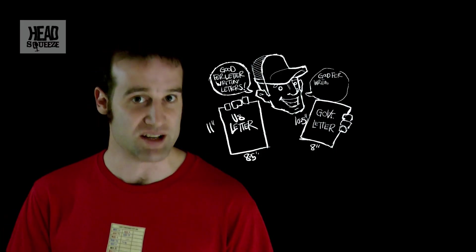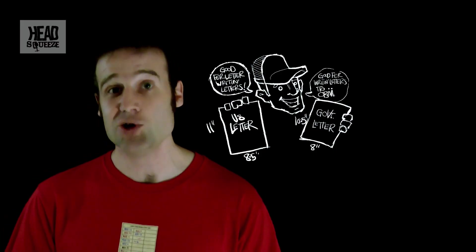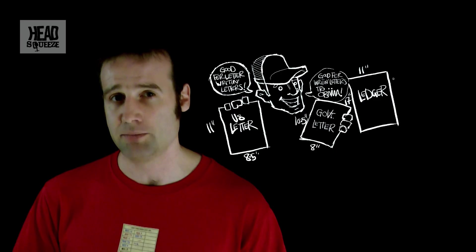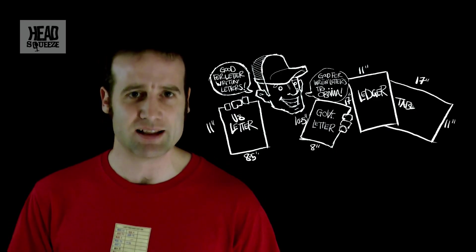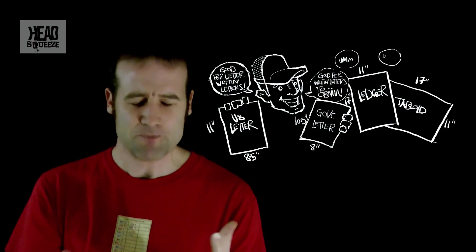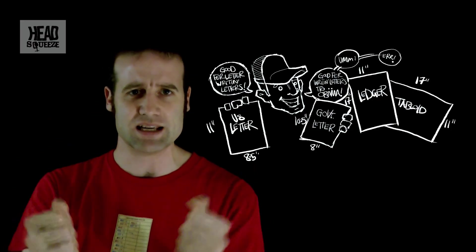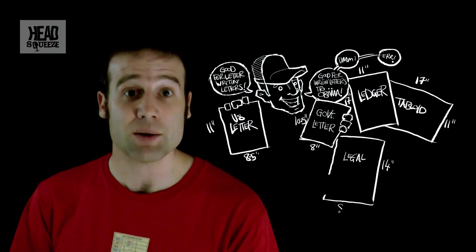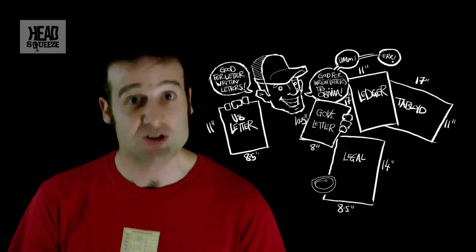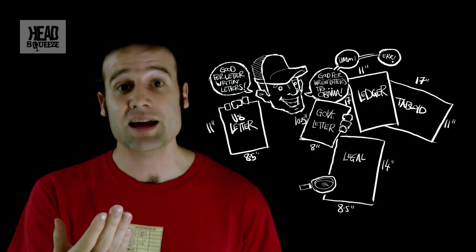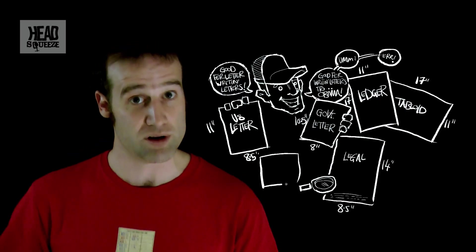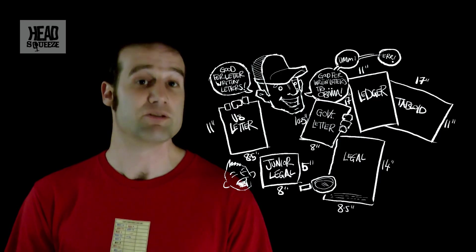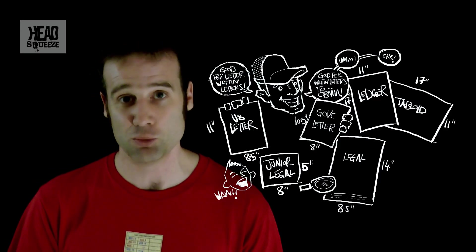You then have ledger, should you be writing a ledger, that's 17 inches by 11 inches. You have tabloid, that's 11 inches by 17 inches. Which you may notice is remarkably similar to ledger. Ledger and tabloid are exactly the same size. One is just turned on its side. You don't get a different size piece of paper by rotating it slightly, but that's beside the point. You then work your way down to legal. That's what you use if you're suing someone. That's 8.5 inches by 14 inches, which is actually the same size as normal letter, except it's a little bit longer. So you've got room for all the small print at the bottom. And then you've got junior legal. That's what you use when you're suing a child. That's 8 inches by 5 inches. It's kind of the fun size legal piece of paper.